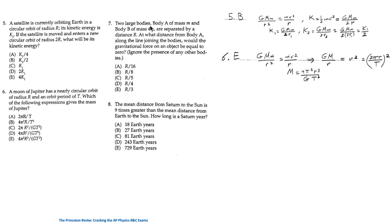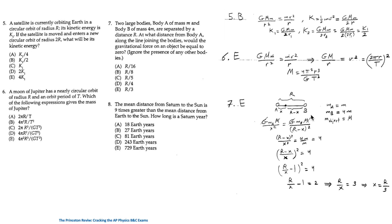For question 7: body A has mass m and body B has mass 4m, separated by distance r. Let the object's distance from A be x, making its distance from B equal to r − x. For the net gravitational force on the object to be zero, the force from A must equal the force from B. Equating gives r/x − 1 = 2, so x = r/3. The answer is E.